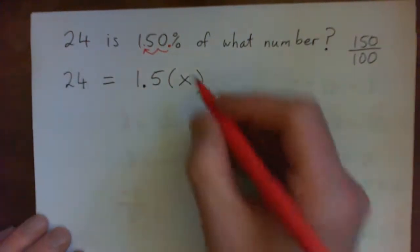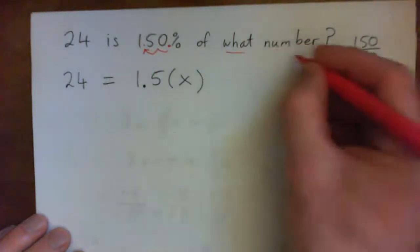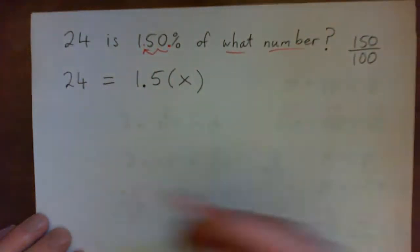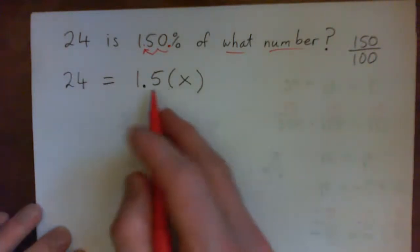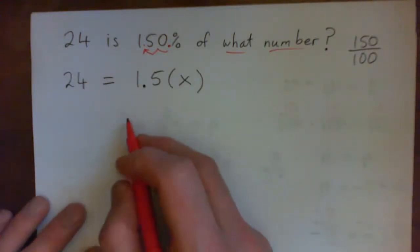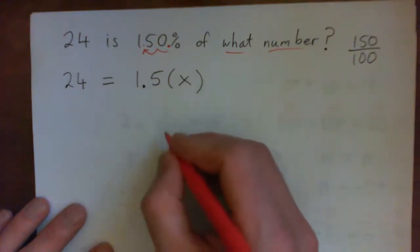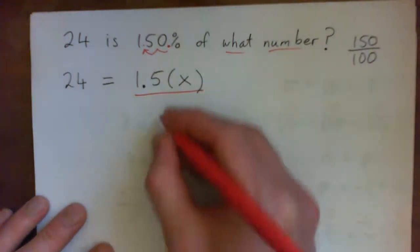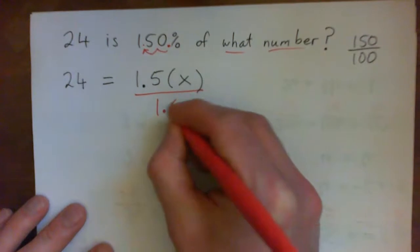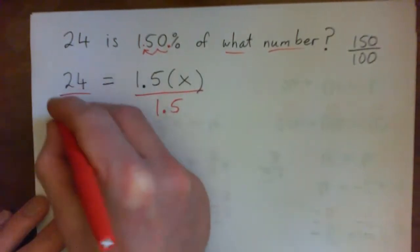Now we need to solve for X to figure out what number it is. X is being multiplied by 1.5. So to get it on its own, we need to divide by 1.5. On both sides.